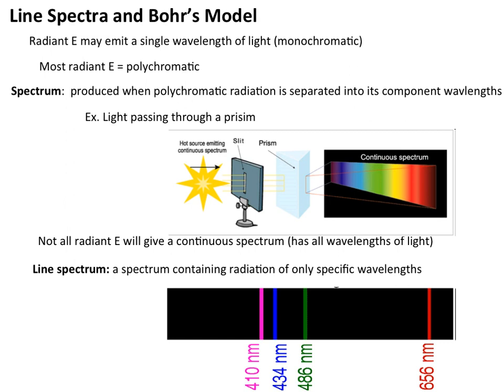A spectrum is produced when you take polychromatic light, such as sunlight, and pass it through a prism. When you do this, those individual wavelengths get split and are shown in what's known as a continuous spectrum. Basically, because all wavelengths are present, you have all colors present from violet all the way to red. That visible spectrum is seen when we pass polychromatic light through a prism.